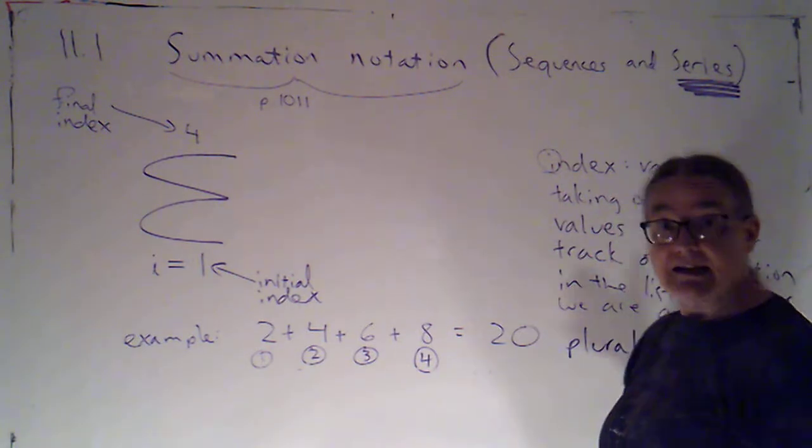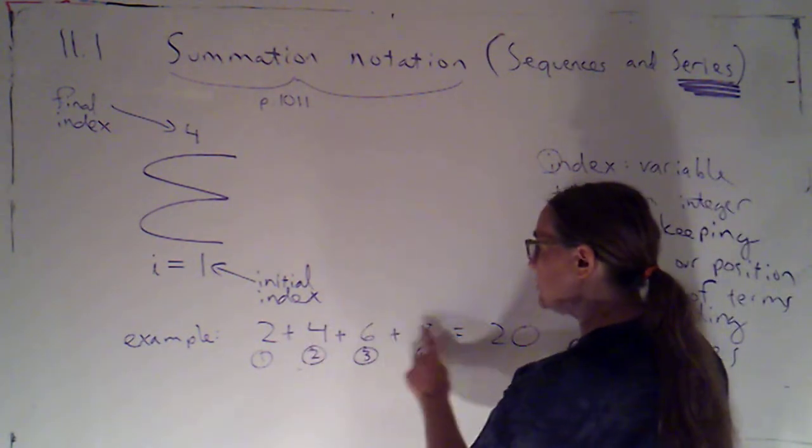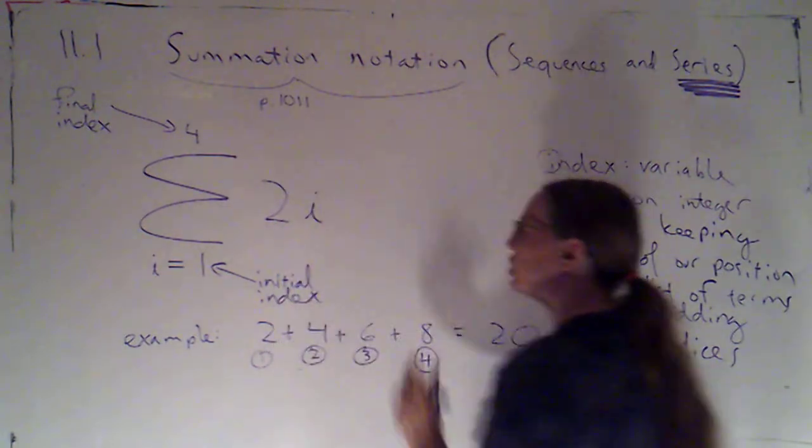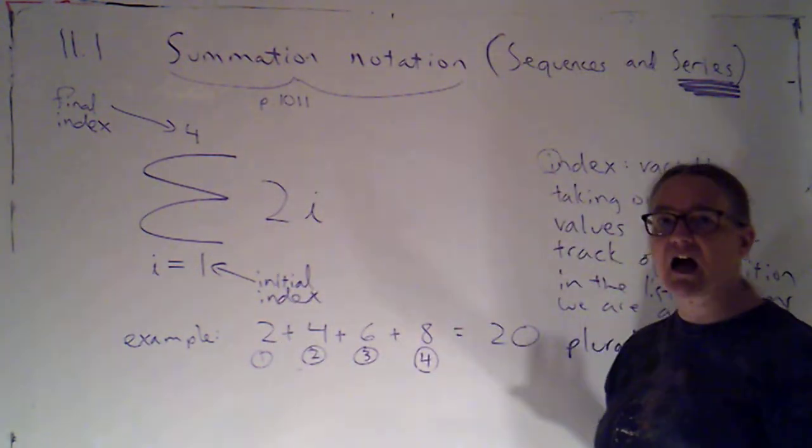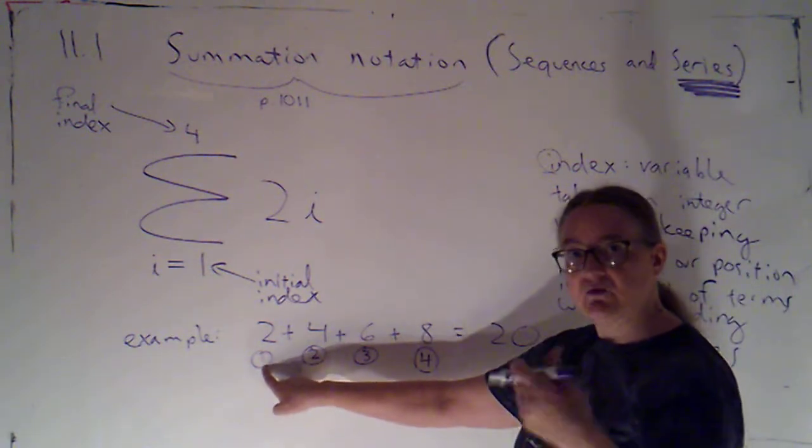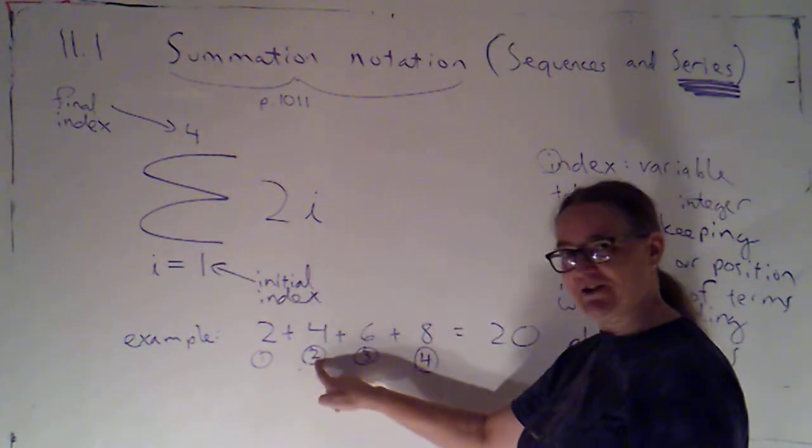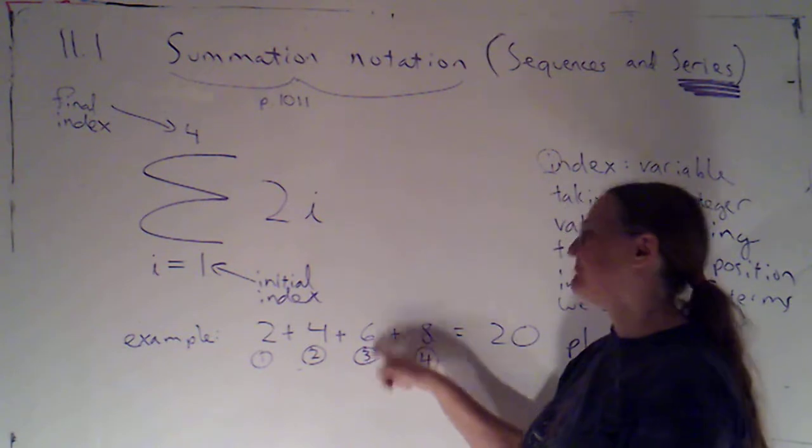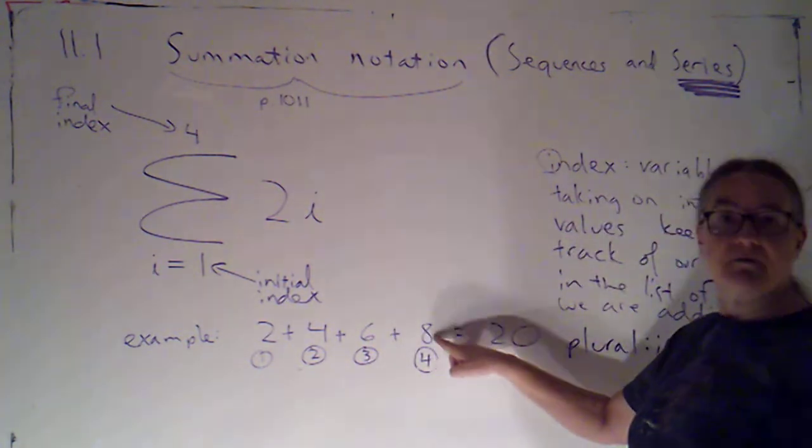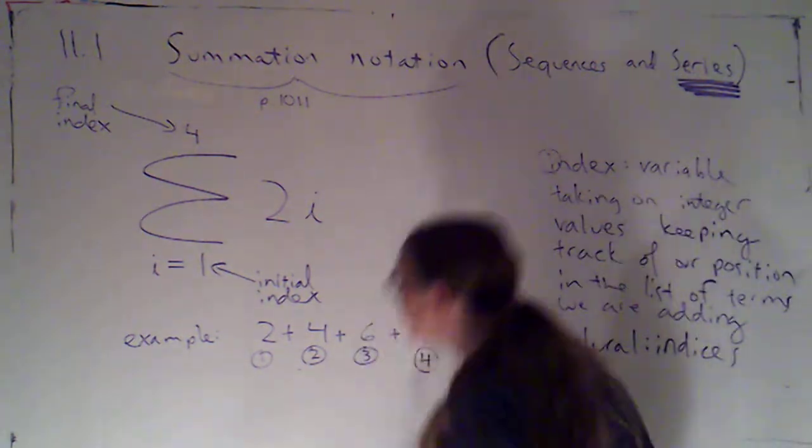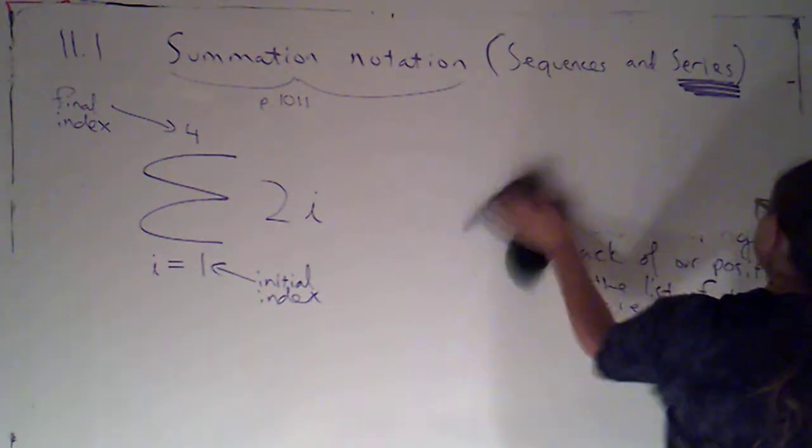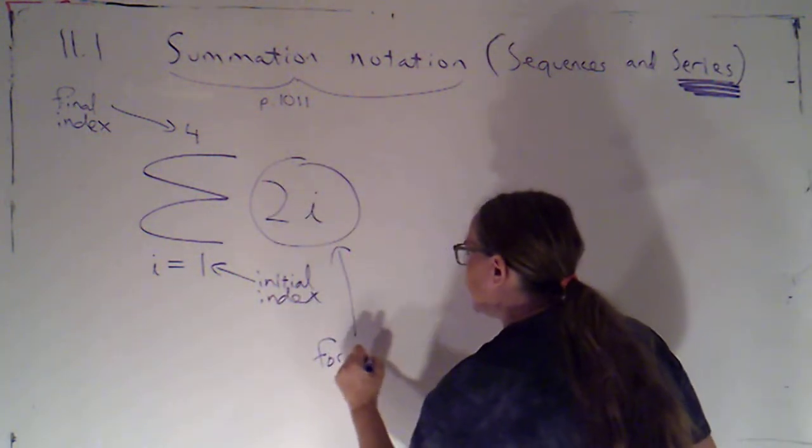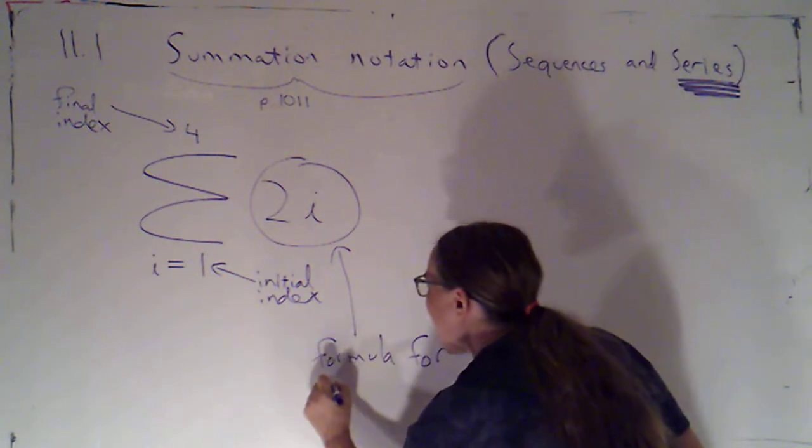So I choose a variable to use as the index. And I set it equal to the initial index. And then up here, I'm going to put the final index. I'm going until I hit the fourth term. So that's my final index. And this is saying add up all of the terms starting at the first term and going to the fourth term. But then I want to try to avoid having to write them individually. So what I'm going to hope is that there's a connection between the term and the index. That there's some formula that will allow me to express the terms in terms of the index. And it looks like I can. These are even numbers. Each of these terms is just double the index. So I can say my I-th term is two times I.